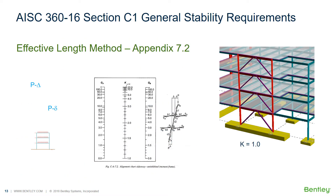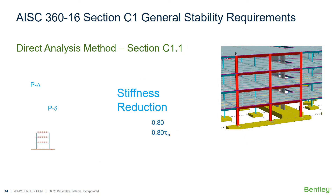In Appendix 7.2 of AISC 360, the specification gives a method called the effective length method that can be used to satisfy the stability requirements. It involves several steps, most notably the use of the effective length factor K. There are limits to the use of this method, but I generally recommend that this method be used for braced-framed structures since K equals 1. Alternately, Section C1.1 gives the direct analysis method. The direct analysis method is not a single analysis, but rather a methodology — a series of required steps. Most notably, in this method the structure is analyzed using reduced member stiffnesses. When this method is used, actual lengths rather than effective lengths are used; that is, K equals 1. I generally recommend that this method be used for moment frame structures.